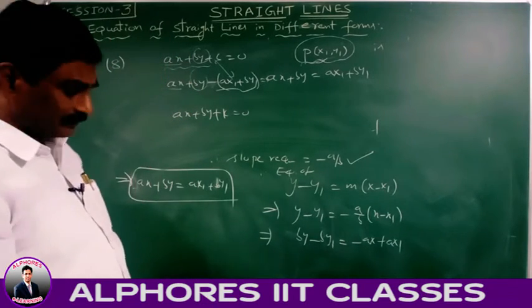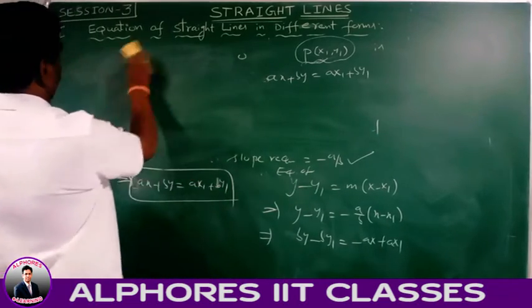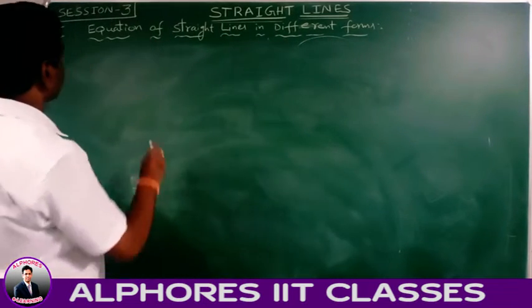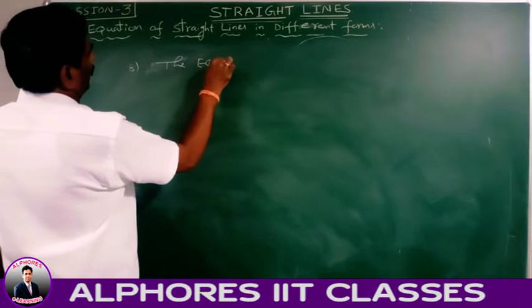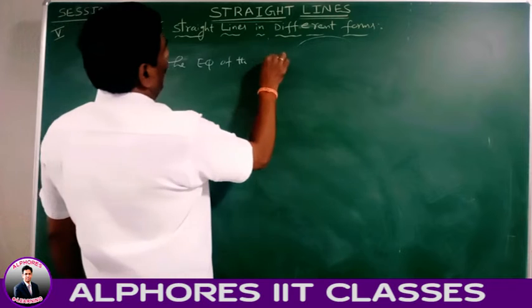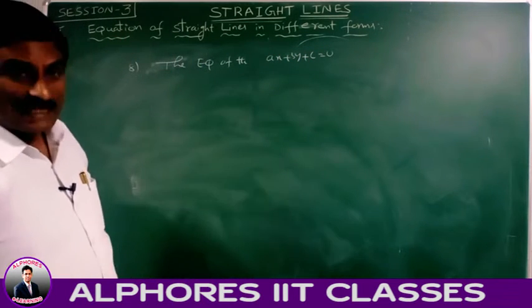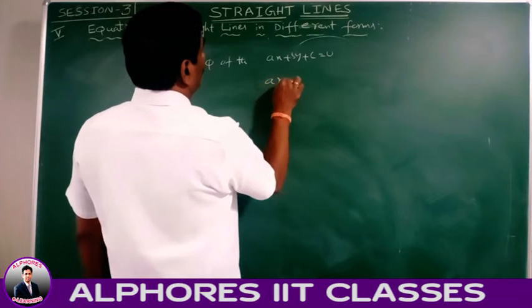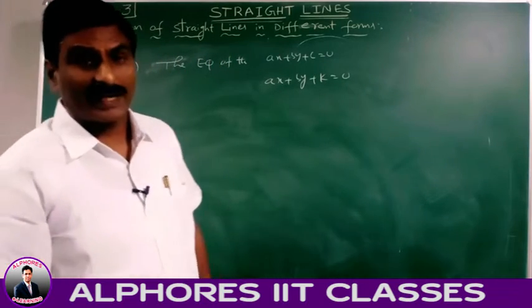The equation of the line which is parallel to ax + by + c = 0 is in the form ax + by + k = 0, where k is a constant.